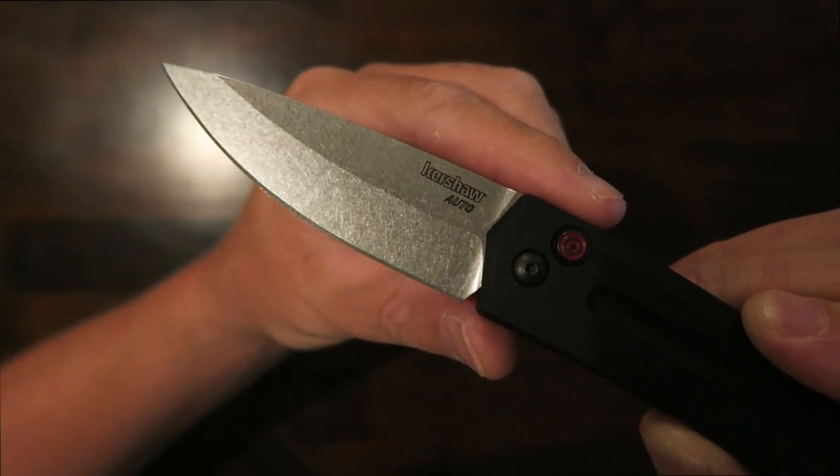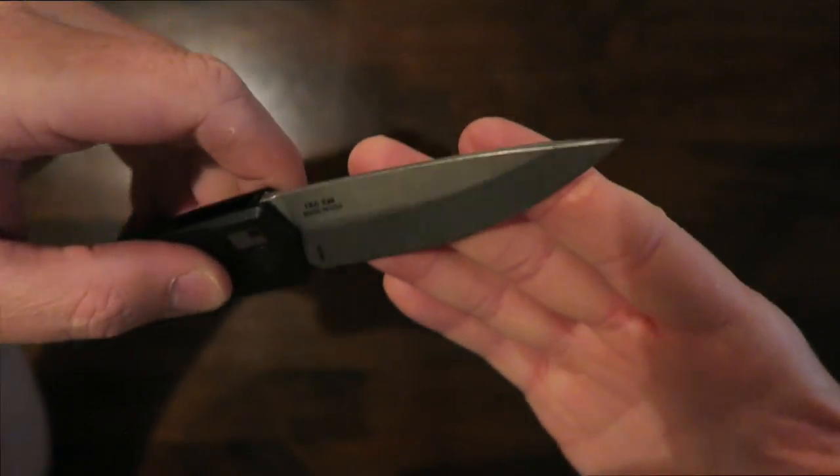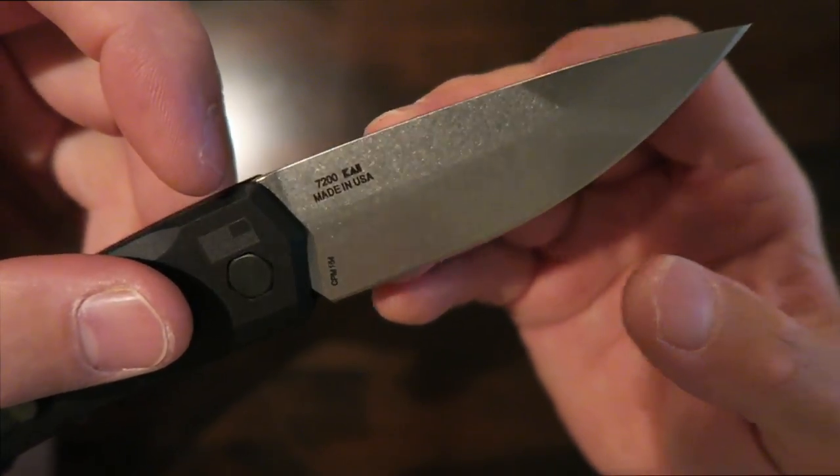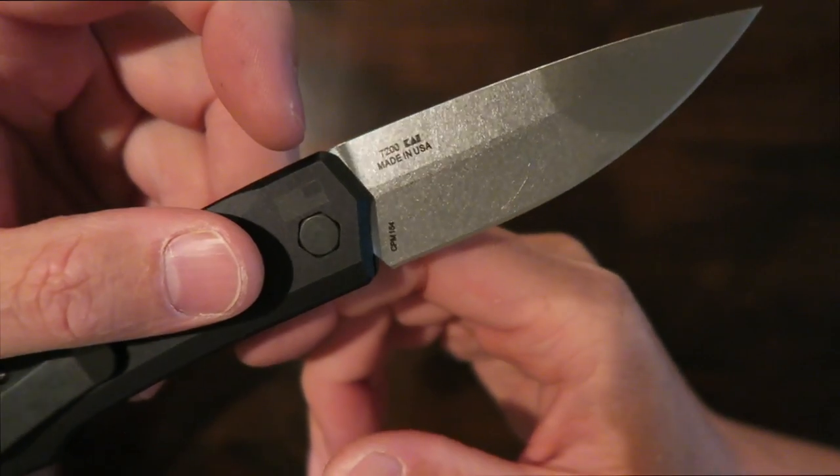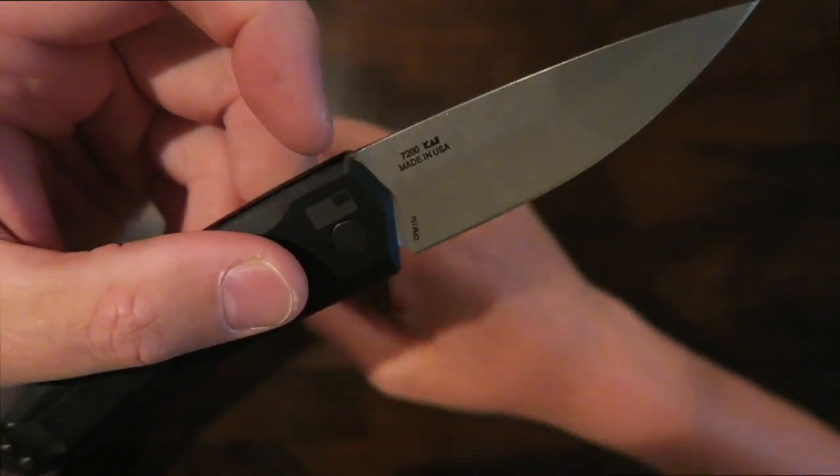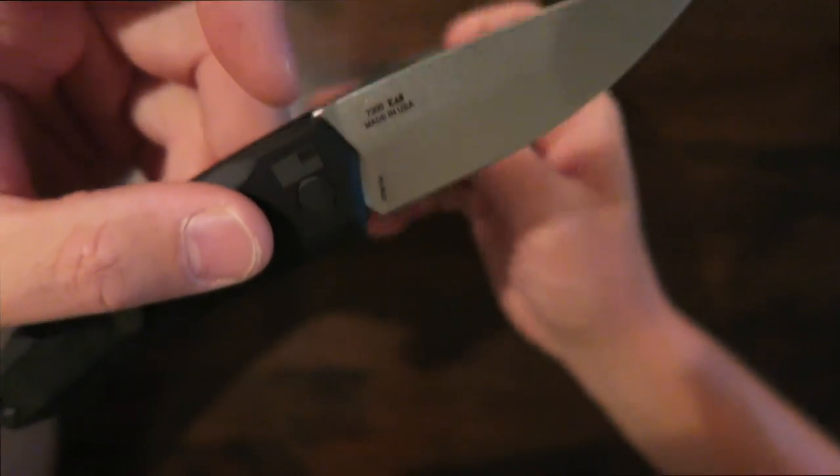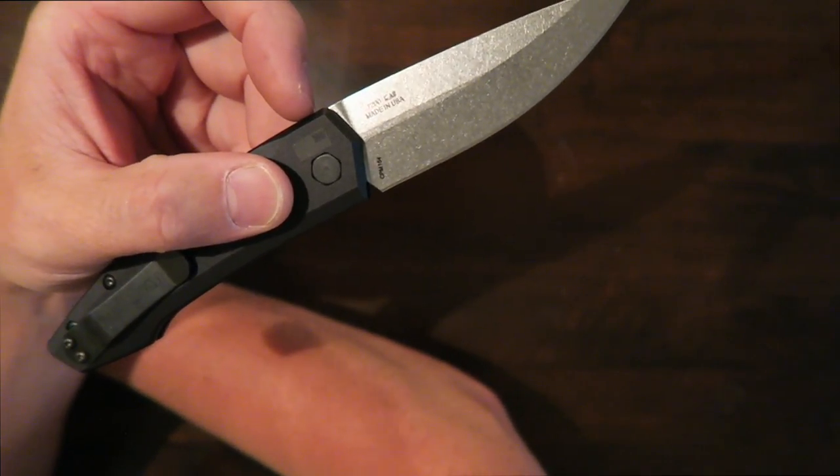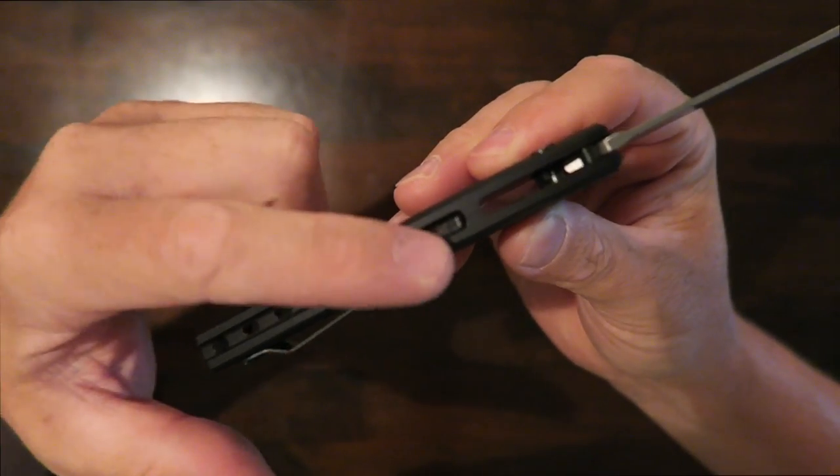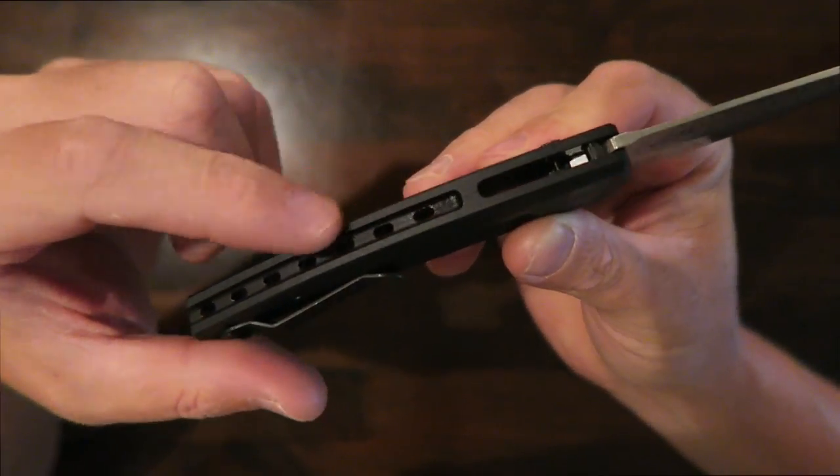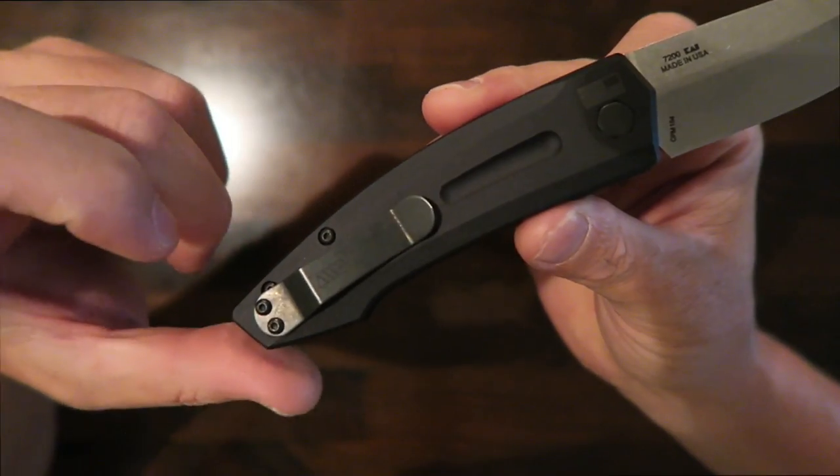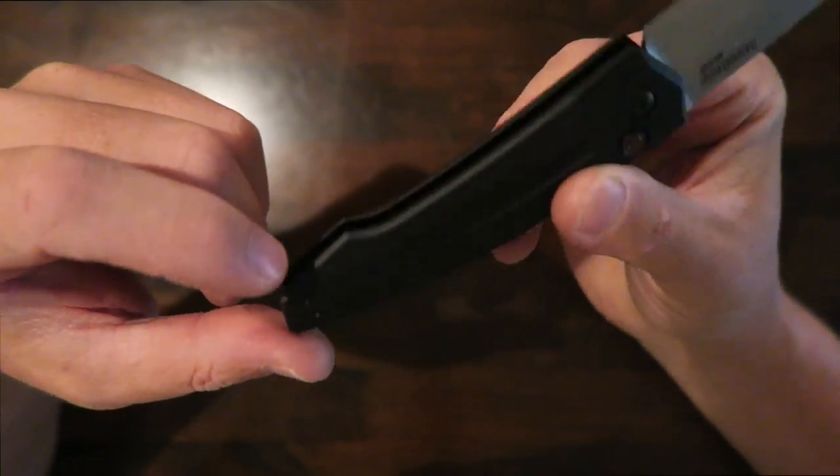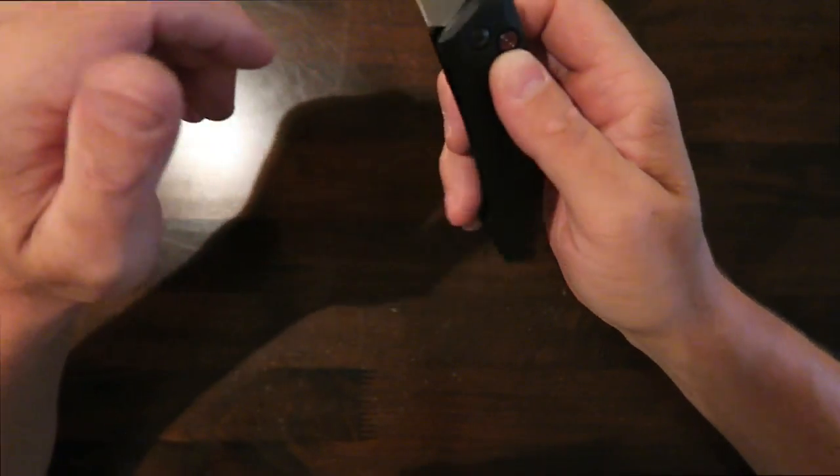It's CPM 154 steel, very similar to what Benchmade uses in a lot of their knives and this is also made in the USA. You can see made in the USA and the American flag there so that's really cool. So two of the knives that are made in the USA are the Link and the Launch 2. It's got a cool design that's not a backspacer. That's actually part of the aluminum handles so that's pretty cool. No lanyard hole on this one but the pocket clip is reversible left and right tip up only.